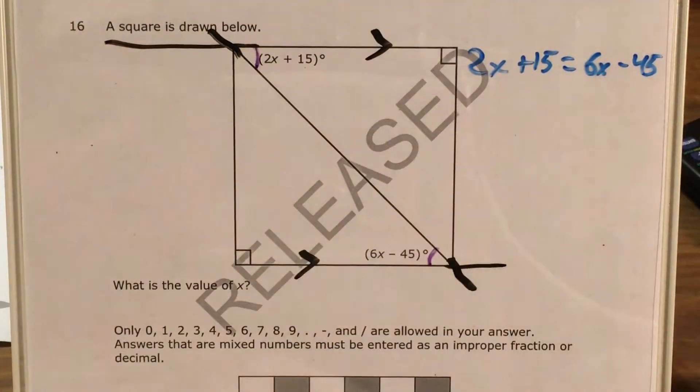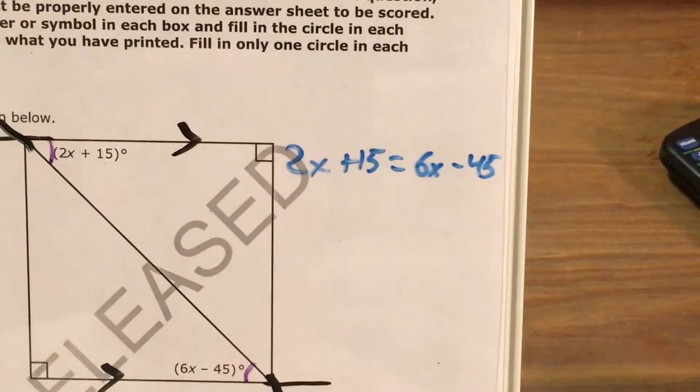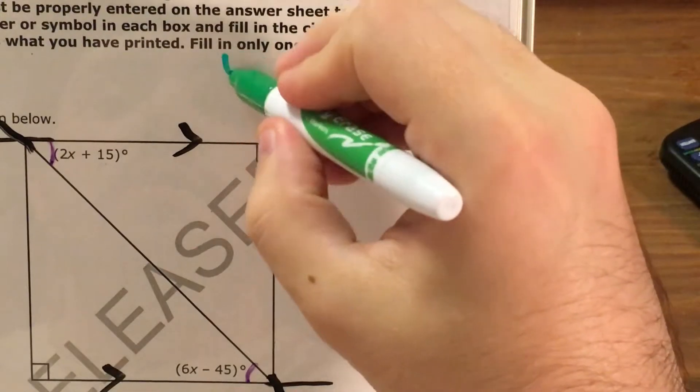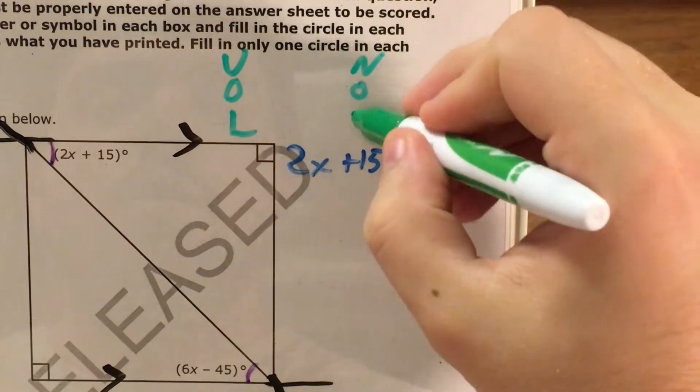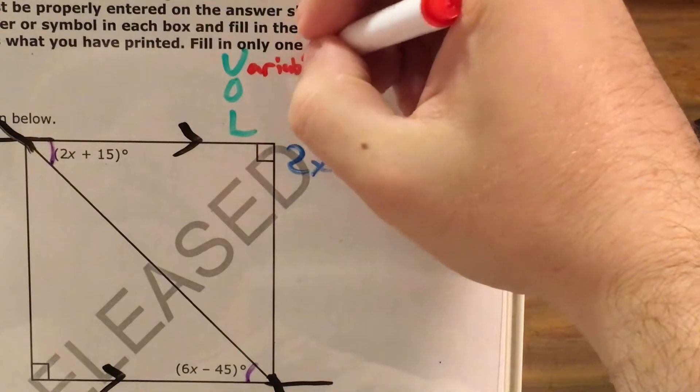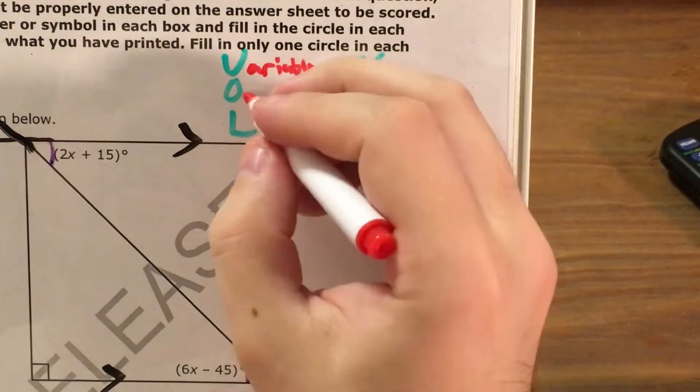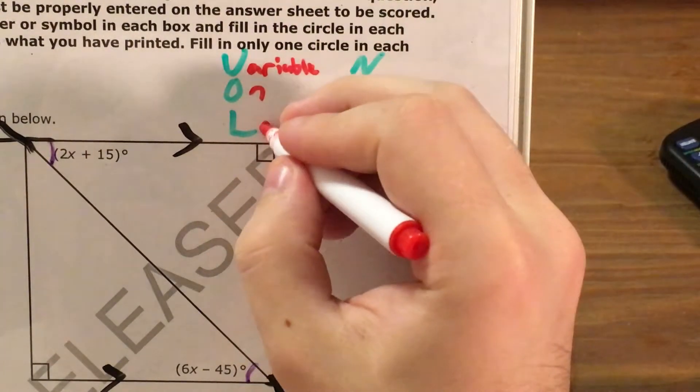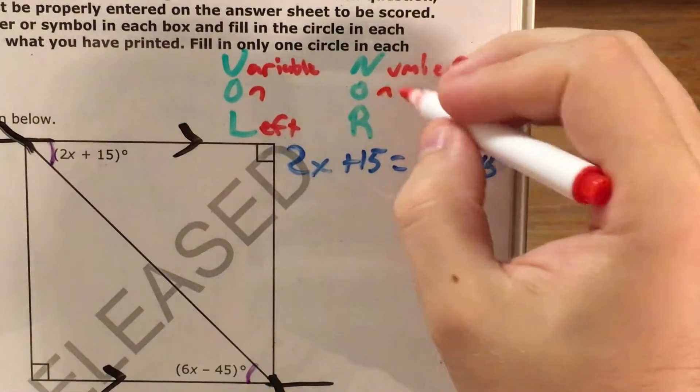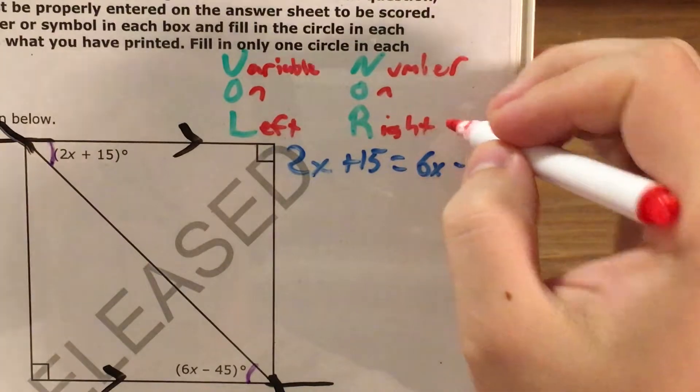And this is where we get to that part about what to do with an equation if we have a variable on both sides. So I will actually go ahead and zoom into this real quick because there is a trick that I like to use for this. I call it the vulnor trick. Essentially, we want to have a variable, to have our variables only on the left side and to have all of our numbers on the right side.